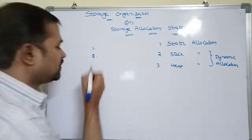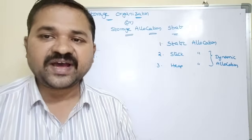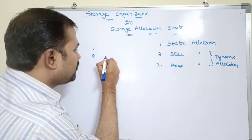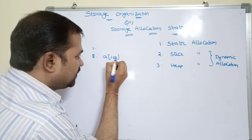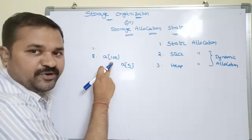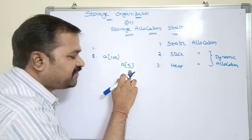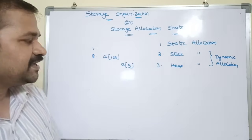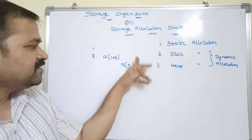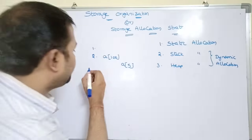The second drawback: if more memory is allocated than required, memory will be wasted. For example, if memory is allocated for 100 elements but we use only 5 elements, then 95 elements' worth of memory will be wasted.